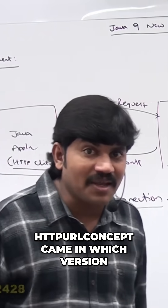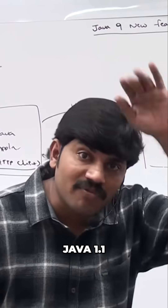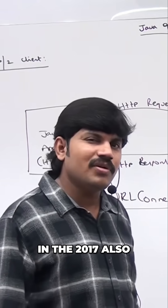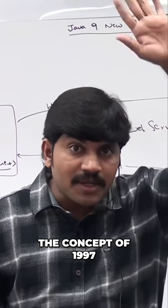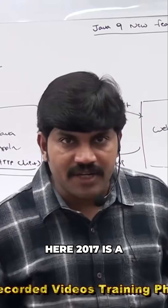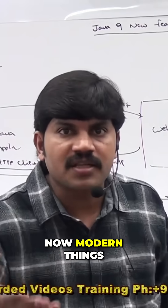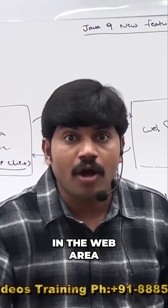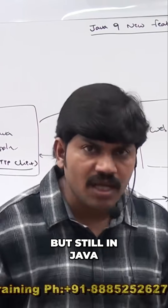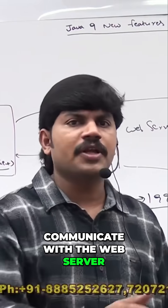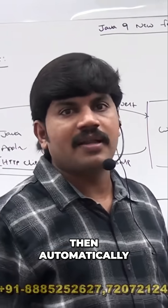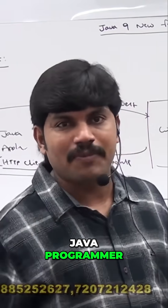The HttpURLConnection concept came in Java 1.1, in 1997. And in 2017 we are still required to use a concept from 1997 — how stupid is that! In the web area, how many developments have come? In servers, how many improvements are there? But still in Java, if you want to communicate with a web server, you have to use the 1997 HttpURLConnection only. How pity for the Java programmer.